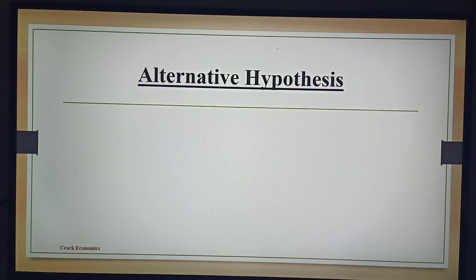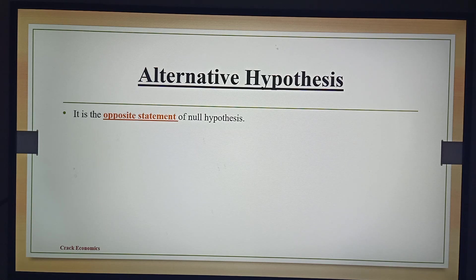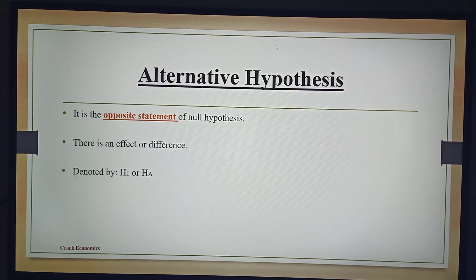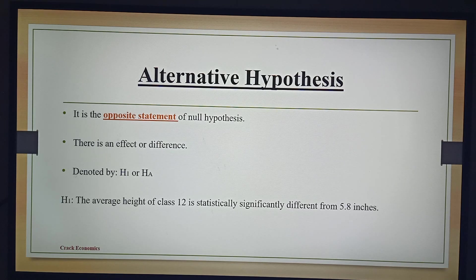Now, what is alternative hypothesis? The alternative hypothesis is the opposite statement of null hypothesis. In other words, it is a statement that the null hypothesis is wrong. It is denoted by H1. So, the alternative hypothesis says that there is an effect or difference. In our example, the alternative hypothesis is: the average height of class 12 is statistically significantly different from 5.8 inches.